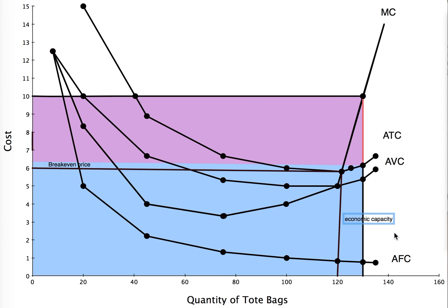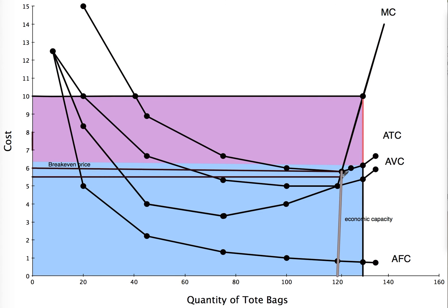The other concept to look at is the shutdown price. The shutdown price indicates the cut-off at which we are better off if we close our doors and go home. If the price falls below that break-even price of $6 — for example, if the price was $5.50 — we can see that if we produced until price was equal to marginal cost, we would be below the average total cost curve.